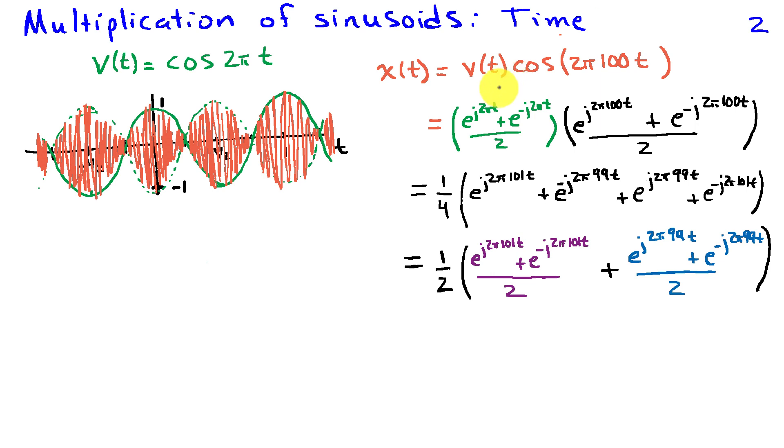We can take this product using the Euler expansion. So I've rewritten the cosine of 2 pi t as e to the j 2 pi t plus e to the minus j 2 pi t over 2. And then I'm going to write cosine of 2 pi times 100 t as e to the j 2 pi 100 t plus e to the minus j 2 pi 100 t divided by 2.